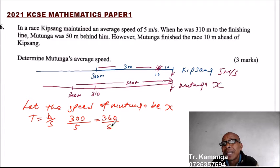The speed is equals to the time taken by Mutunga to cover 360. You divide by the speed and the speed of Mutunga, we have said it is X. So you cross multiply, and say, X is equals to 360,